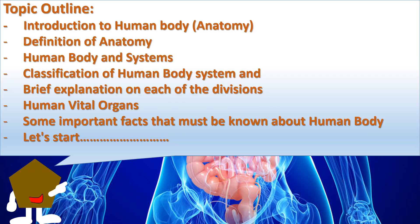Topic outline: introduction to human body anatomy, definition of anatomy, human body and systems, classification of human body systems and brief explanation on each of the divisions, human vital organs, and the important facts that must be known about the human body. Let's start.